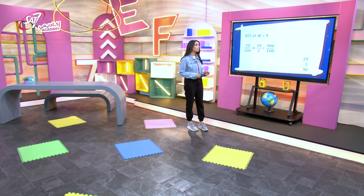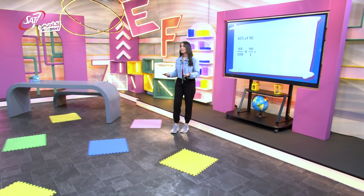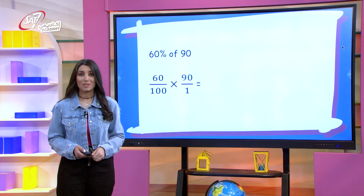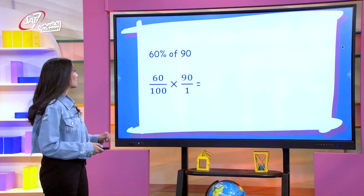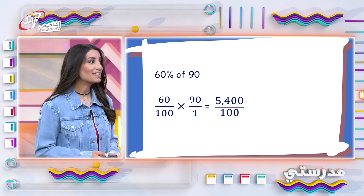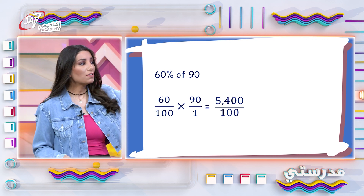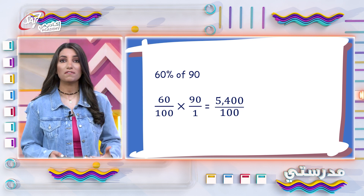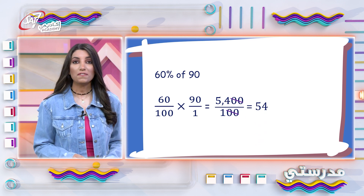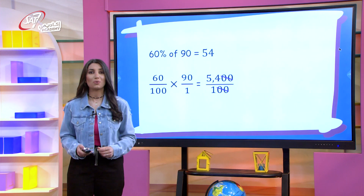There were 90 students in 4th grade. 60% of them chose playing music as an after-school activity. How many students joined the music club? What is 60% of 90? 60% means 60 over 100, multiplied by 90 over 1. 6 times 9 equals 54, so 60 times 90 equals 5,400. 5,400 divided by 100 equals 54. So 60% of 90 is 54 — 54 students joined the music club.